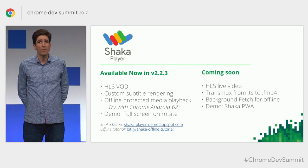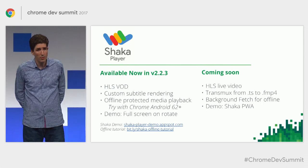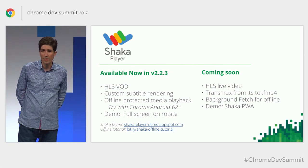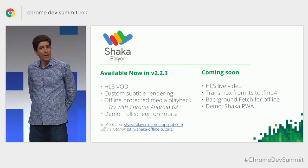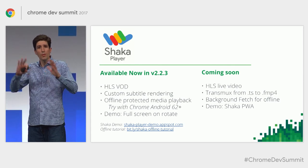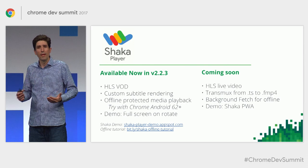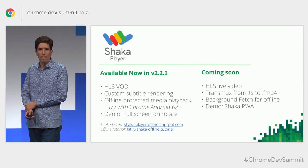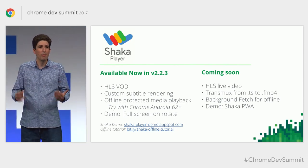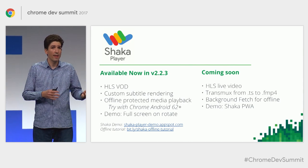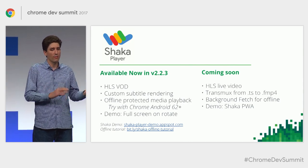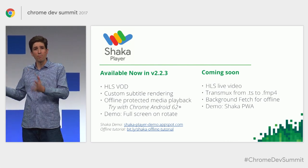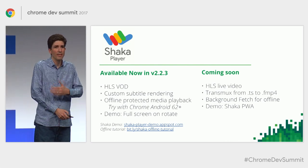Coming soon will be Apple HLS support for live video, including support for MPEG-2 transport stream files — a fairly common HLS format. They're also working on adding background fetch for offline, which will really round out the offline story by allowing users easier download flows. Shaka has a demo player that includes examples for full screen and rotate, and they're working on adding progressive web app features to the demo to give you reference code.